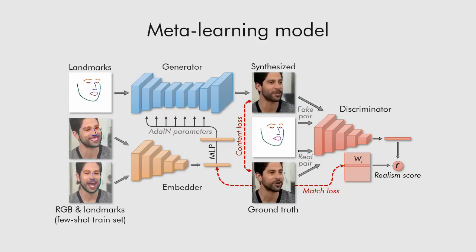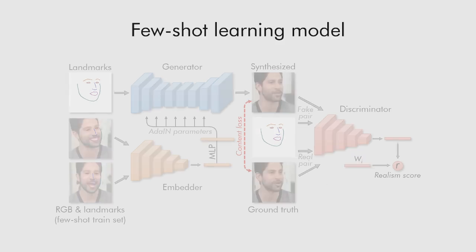Better identity preservation is achieved by having a trainable embedding vector inside the discriminator for each training video. For more details, please refer to the paper. After meta-learning, we are able to fine-tune the generator and the discriminator. These networks have tens of millions of parameters. Still, such fine-tuning is possible on just a few images, thanks to the good initialization provided by the meta-learning stage.